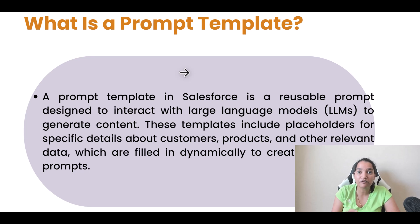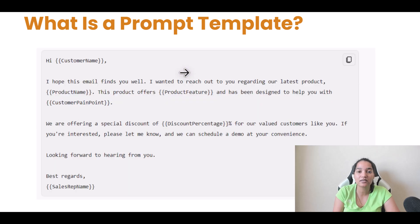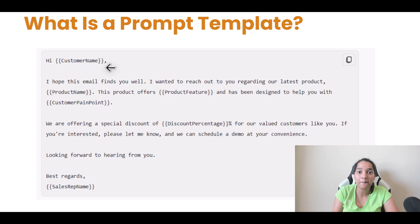Once it has fetched that information from the Salesforce data, the prompt template actually gets converted into a proper prompt. So from the prompt template, you create a prompt. You can see here there are placeholders — for example, a placeholder called customer name. During runtime, it is going to fetch that information from your Salesforce data and replace it there. Inside the prompt template, you will have a bunch of placeholders that get replaced with CRM data — it fetches fields from CRM objects, and it can fetch related lists, etc.